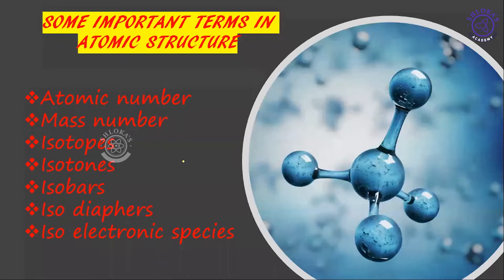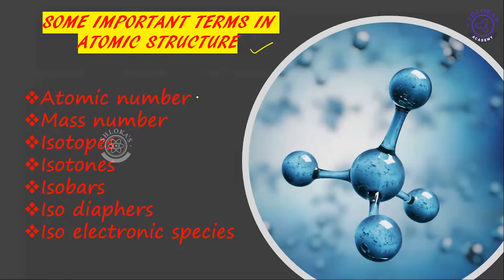Hello, my dear students, welcome back to Shloka's Academy YouTube channel. In the last video we discussed the Rutherford atomic model, all three results, and its limitations. Today we are going to discuss some important terms used in atomic structure: atomic number, mass number, isotopes, isotones, isobars, isodiaphers, and isoelectronic species.